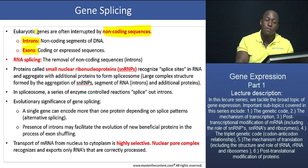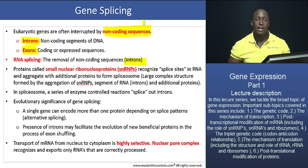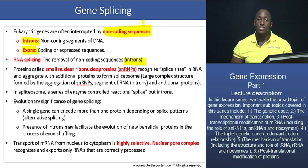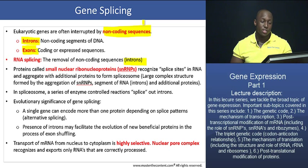Gene splicing is the removal of non-coding sequences — the introns — from mRNA. This is part of maturation; it's another step that mRNA has to go through before it's actually a finished product and can be used in translation.